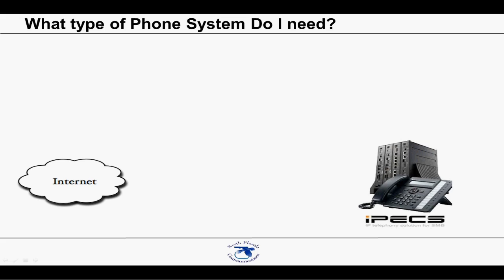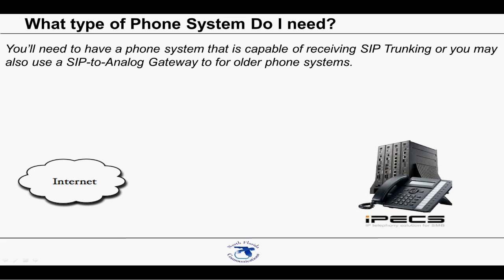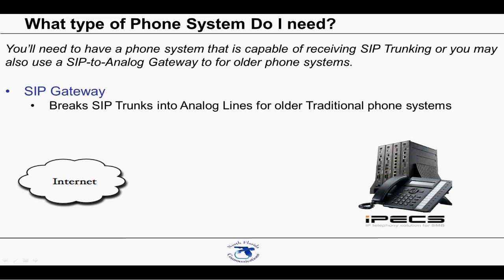You'll need to have a phone system that is capable of receiving SIP trunking. You may also use a SIP to analog gateway for older telephone systems. A SIP gateway is a device that will break SIP trunking into individual lines that replicate POTS lines. POTS is an acronym for plain, old telephone service, just like you get from the traditional phone company. A gateway will allow you to keep an existing phone system that will not natively accept SIP trunks, saving money on an upgrade. However, you will lose a lot of flexibility of SIP trunking by using a gateway.